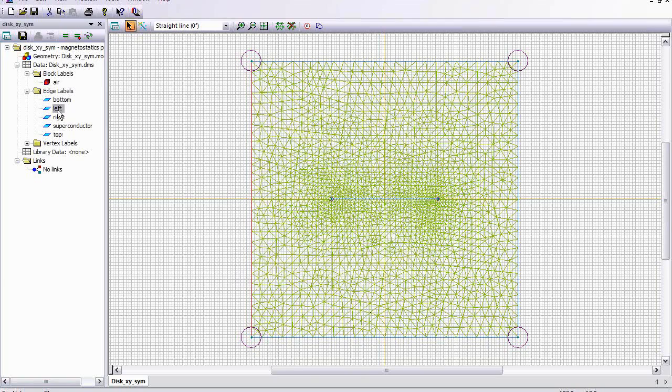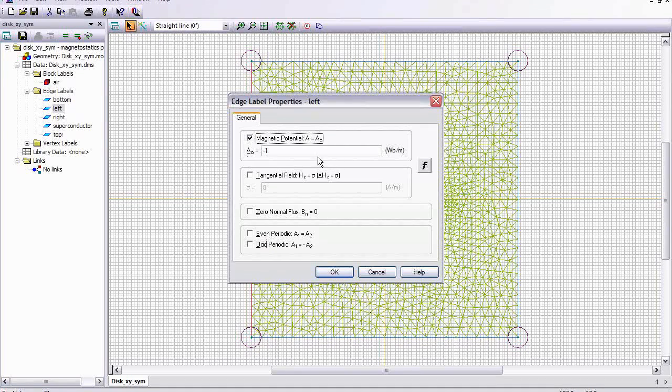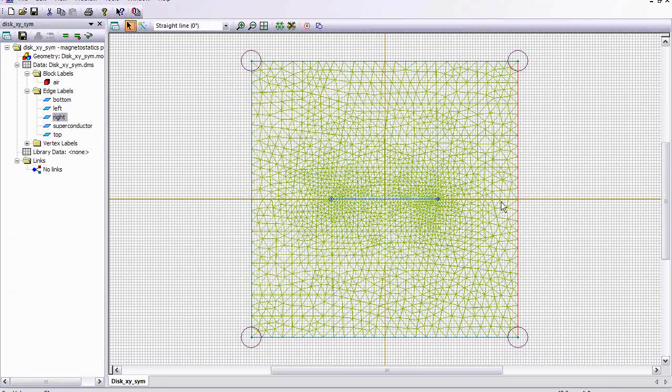Whereas the left is assigned negative one Webers per meter, and the right boundary has one Weber per meter. So we just assign opposite vector potential boundary conditions on the left and right sides, and that will establish a uniform magnetic field.